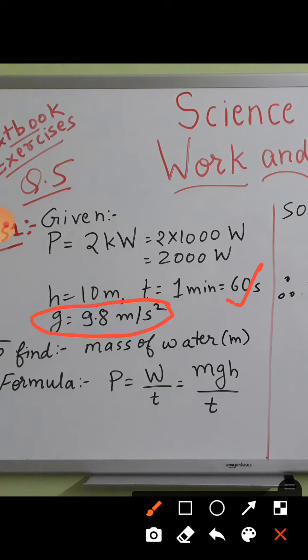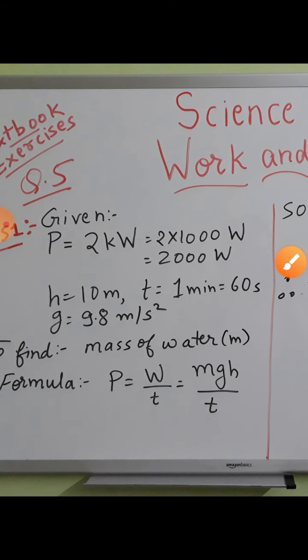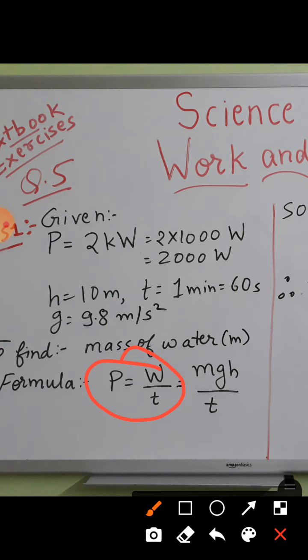We have to find the mass of water. What is the formula? According to the given conditions, power equals work upon time. Work done in this case will be due to potential energy because initially whenever the object is stationary it possesses potential energy. That water was stored in the tank, so work done will be equal to potential energy, that is mgh. Therefore power equals mgh upon time.